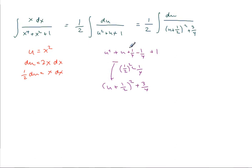And we can either tweak this to make it into an arctan function or use trig substitution. Let's tweak it to make it an arctan function. I'm going to pull out a 3 fourths. So, when I pull out a 3 fourths, I'll be pulling out actually 1 over 3 fourths, so 4 thirds. So, 1 half times 4 thirds. I'll write that step out.